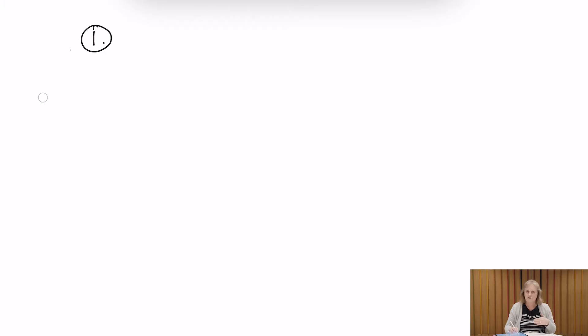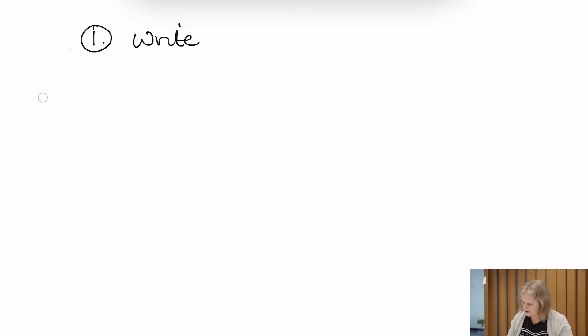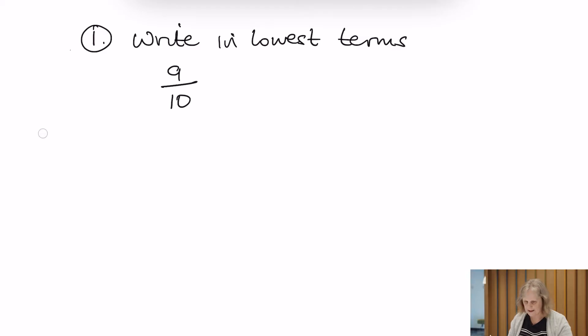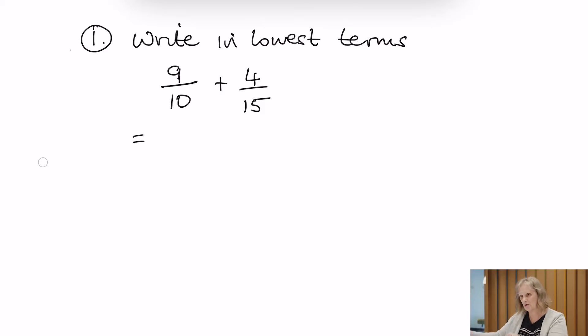On the topic of fractions, we're going to look at this first question. I'm going to explain some of the instructions you get with these types of questions so you can recognise what they're looking for. So if we're looking at this question — write in lowest terms — and we've got 9 over 10 plus 4 over 15. I'm going to write it down the board.